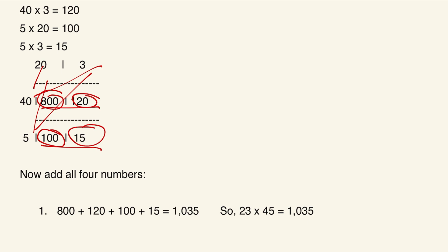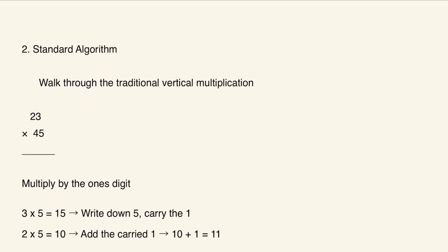The next strategy is the standard algorithm — basically the traditional vertical multiplication you may already know. Personally, I feel this is the easier way to multiply multi-digit numbers, and it's a very convenient strategy. To use it, first write the numbers vertically: 23 times 45.